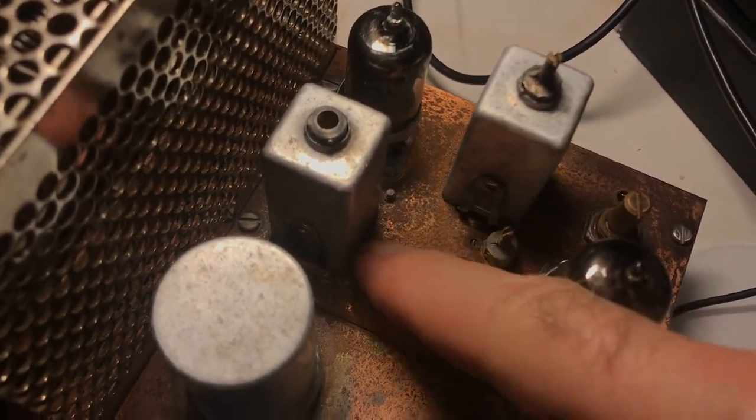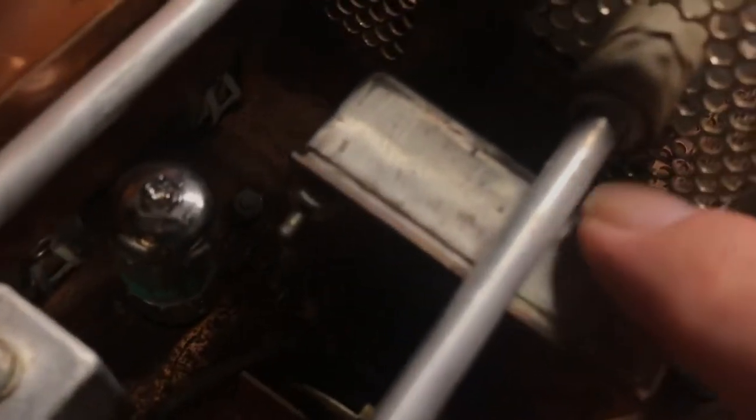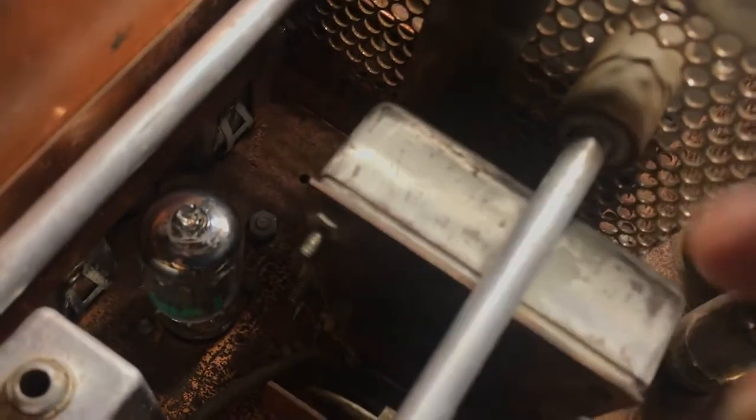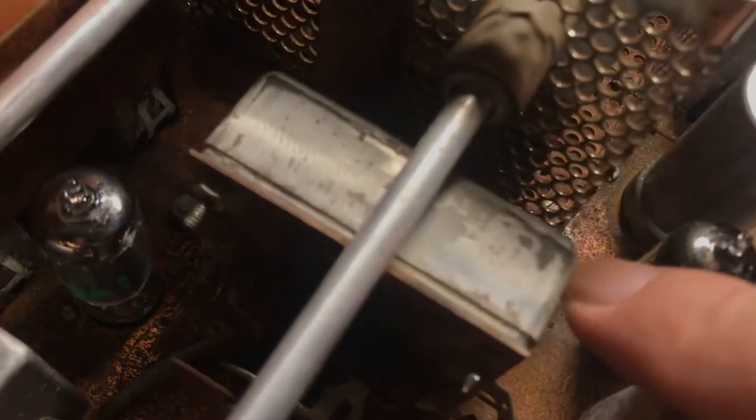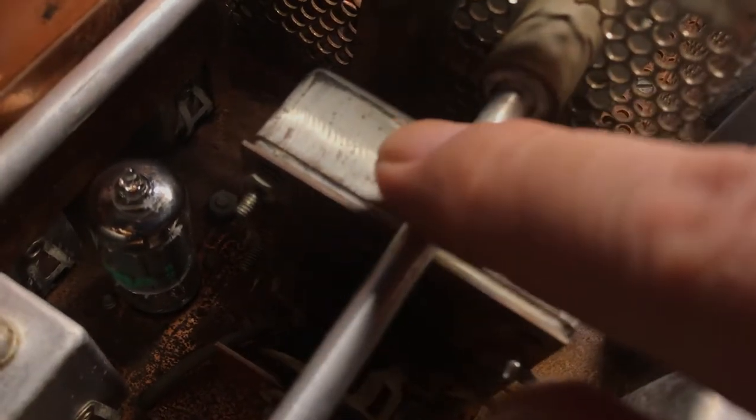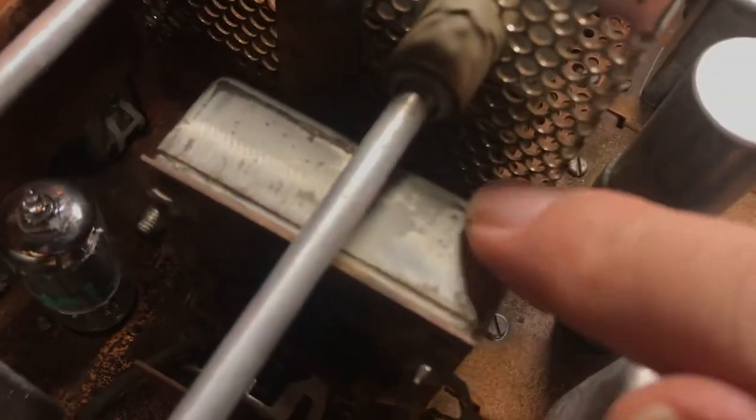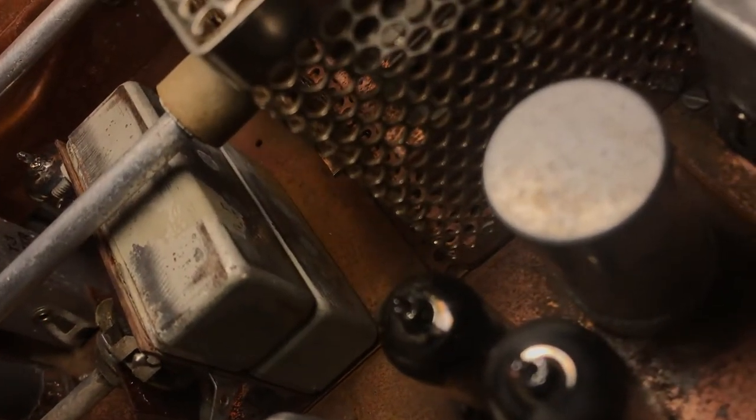I guess it didn't damage anything except I either put Windex on this filter here or something and it ate the paint off it. Windex or fantastic or oven cleaner, I don't think I hit it with oven cleaner, but the paint just came right off it. So I guess I'll get some gray paint and paint it back.